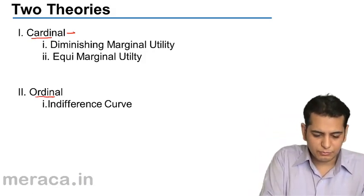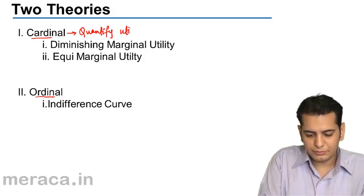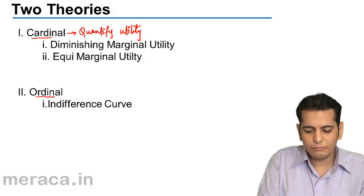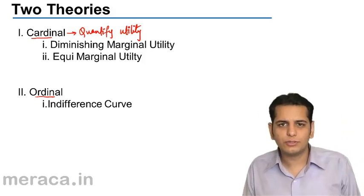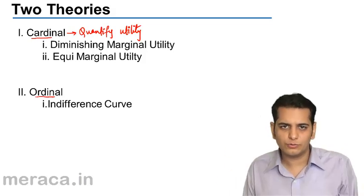Under cardinal principle, we quantify the utility. We tend to quantify the utility in terms of numbers that is 5, 10, 20, so on and so forth.